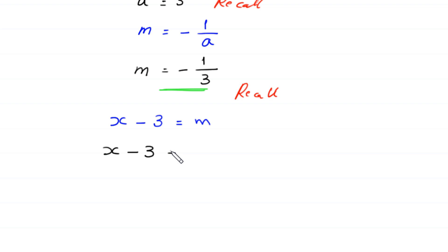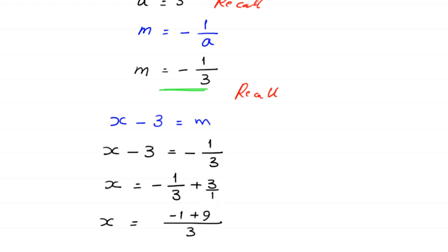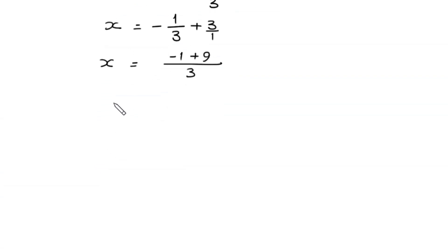So x minus 3 is equal to negative 1 over 3. We move negative 3 to the right side: x equals negative 1 over 3 plus 3. Taking the LCM of 3 and 1, which is 3: x equals negative 1 over 3 plus 9 over 3, which gives x equals negative 1 plus 9 over 3, so x equals 8 over 3. This is the final answer.